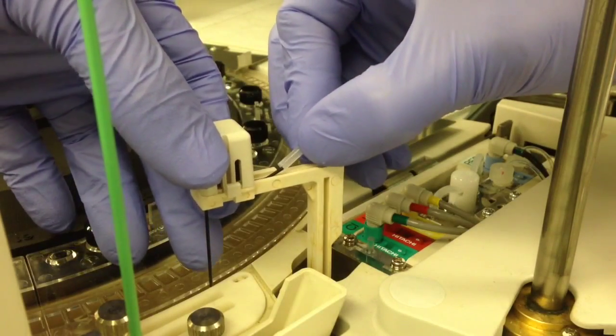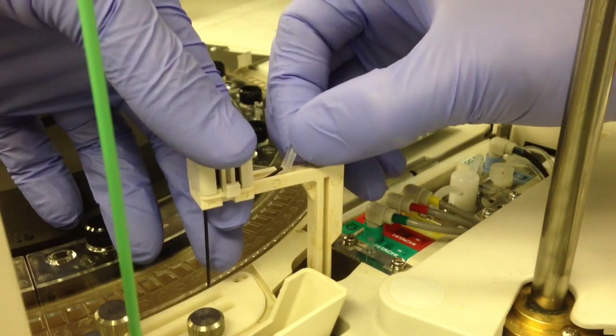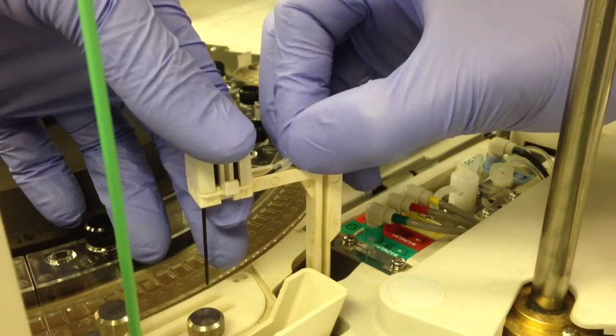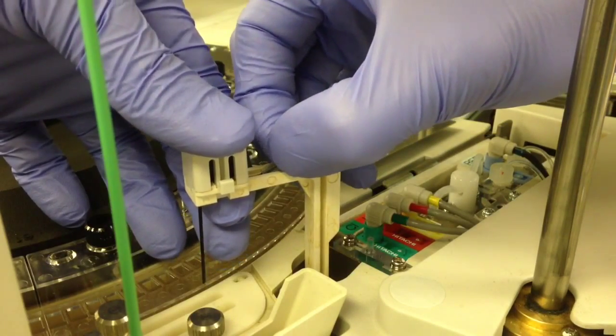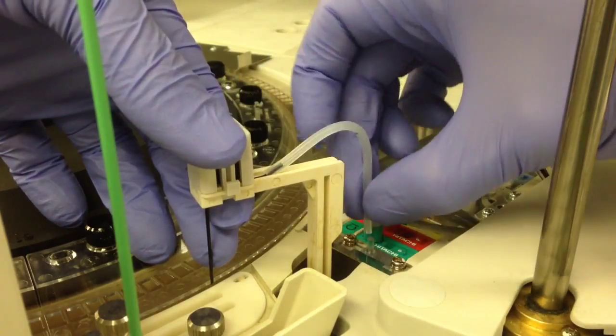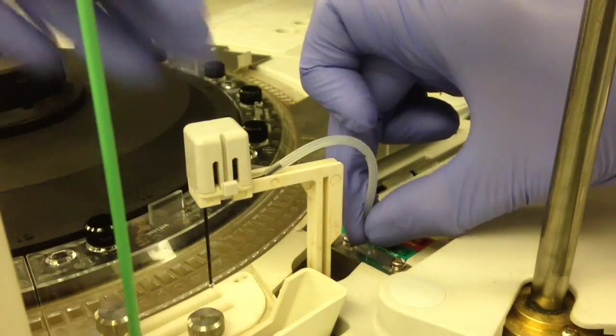Then go ahead and finagle it back on, which can be a little bit awkward. But like I said, just be careful when you're attaching things back onto the sipper probe. You don't want to bend anything.